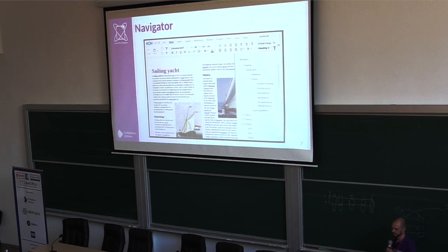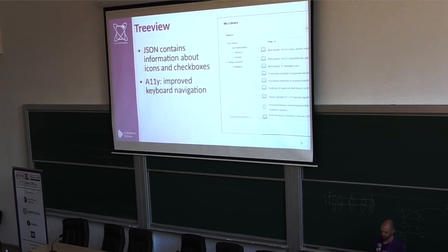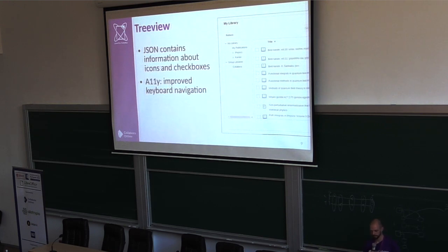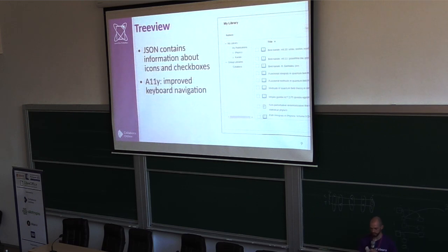Another new component enabled for JS Dialogs is the navigator, which is very useful for large documents. It is sent similarly to how the sidebar was in the past. For the navigator we had to upgrade some widgets we already had in JS Dialogs. We improved the JSON so it contains more information about entries — we can now support content types other than text, such as icons or checkboxes, and interact with them on the browser side. We also improved accessibility so you can navigate the tree using the keyboard, and added annotations so screen readers correctly interpret the entries.